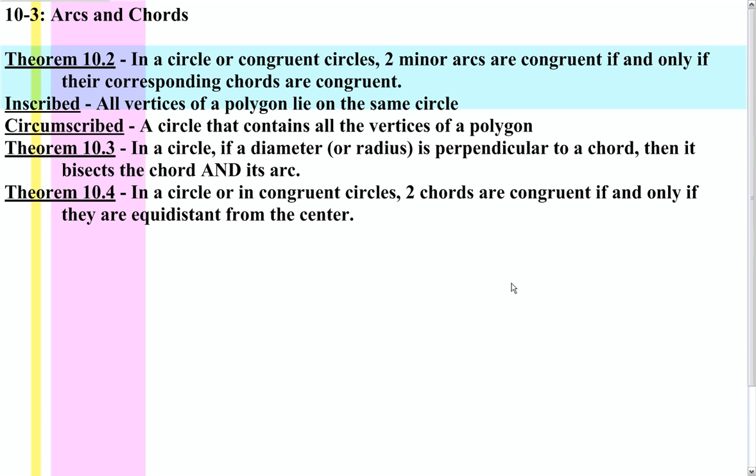If a diameter or radius in a circle is perpendicular to a chord, then it will bisect the chord and the arc. If two chords are congruent, that means they must be both the same distance from the center point in the circle.